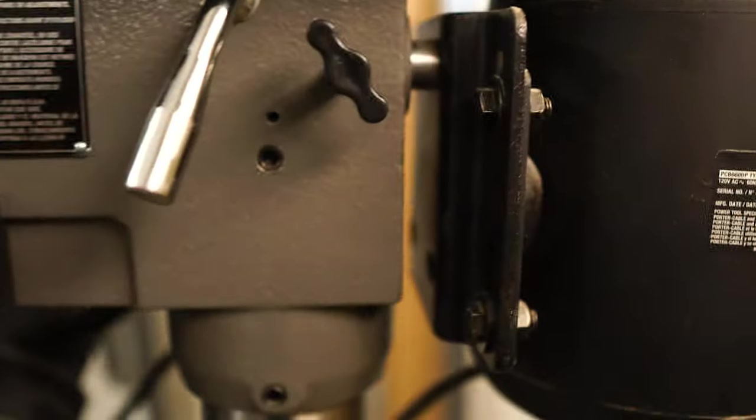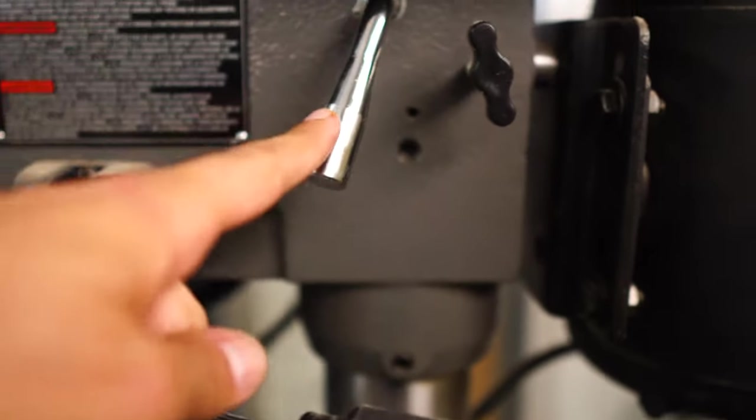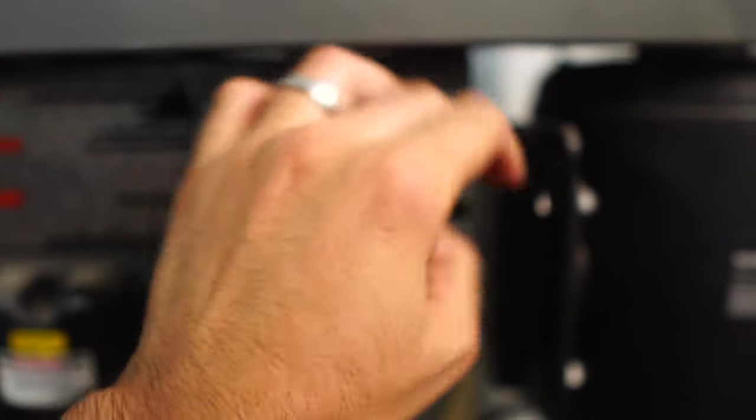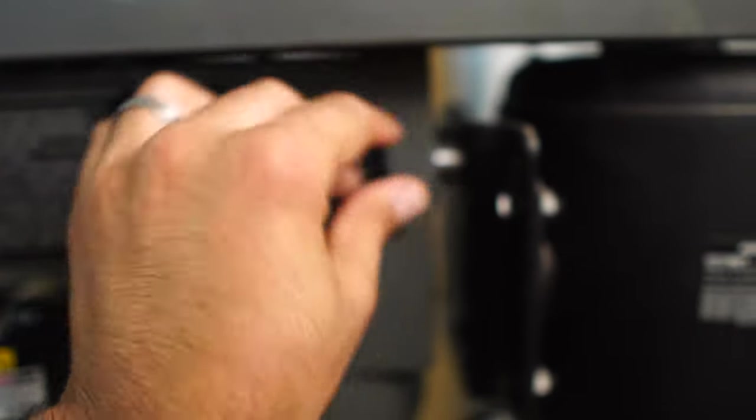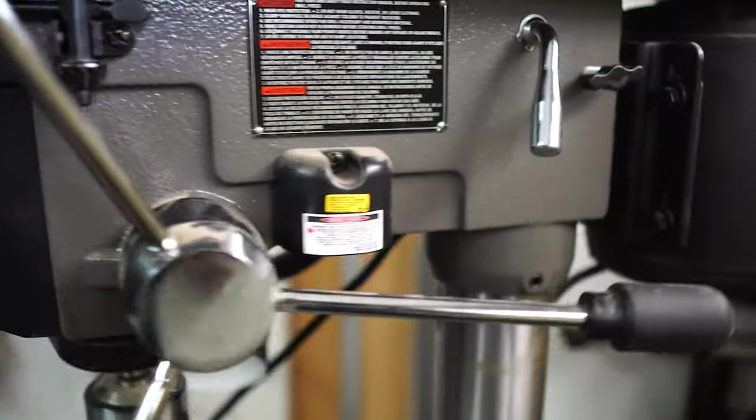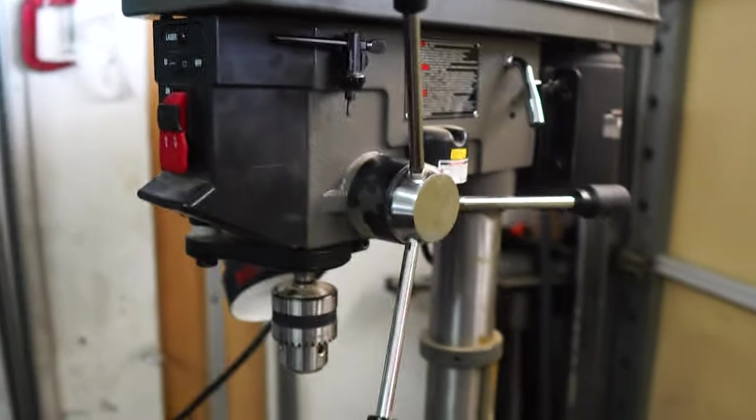Now the first thing you want to do is loosen the tension knob, and there's one on each side. Then you want to loosen the tension handle, and you should see this belt start to lose tension. So we would adjust to whatever the proper setting is, put this back into place, and then tighten the knobs. Close, give it a test run to make sure it's working properly. And that's how you would adjust the speed.